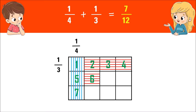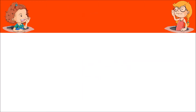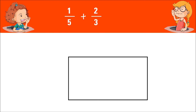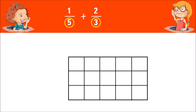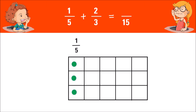Therefore, the answer is seven twelfths. Let's have another example. This time we will be using chips instead of lines. Add one fifth plus two thirds. Draw five columns and three rows — these 15 boxes will be our new denominator. Place the green chips in one column to represent one fifth.